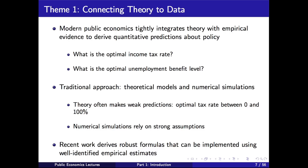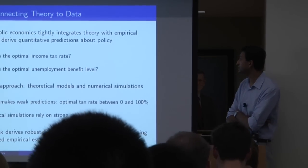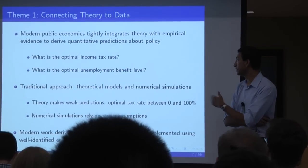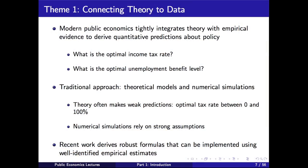The first important theme is connecting theory to data. Modern public economics tightly integrates theory with empirical evidence to derive quantitative predictions about policy. Take questions like: what is the optimal income tax rate on top earners, or what is the optimal unemployment benefit level? We now have tools to come up with actual numbers based on theory and empirical evidence. You see this translation not just in academic journals, but in political debate — editorials in the Wall Street Journal or New York Times cite results of papers answering these questions using the methods we'll discuss.